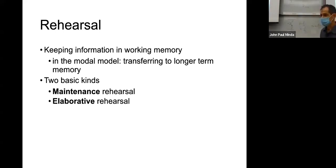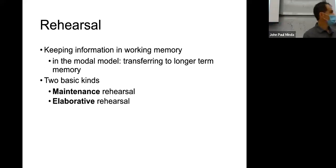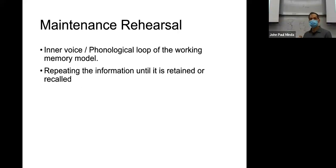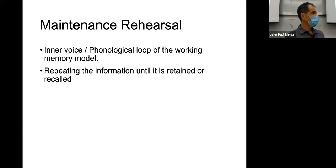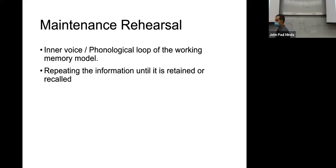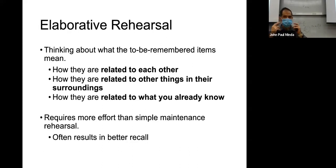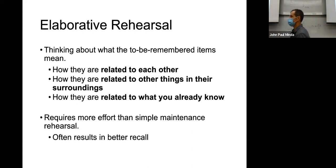Maintenance rehearsal — the inner voice, the phonological loop — is when you repeat information to yourself. That's a good way to remember information that doesn't have much context, like a list of seven things or seven digits. But it's not a good way to remember information for an exam, or for a story you want to tell, or a discussion you want to have. What you want to do is think about what the information actually means — elaborative rehearsal.